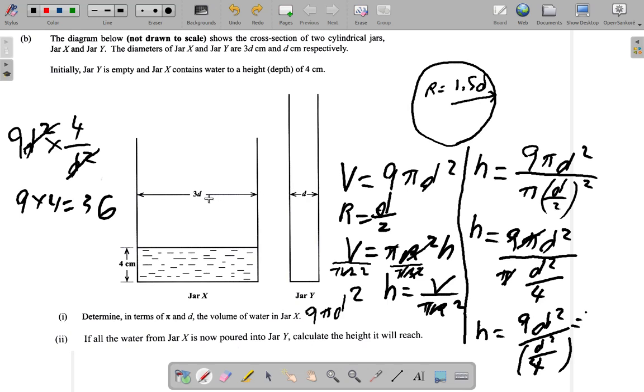Now let's also look at this. Here, the width of the water in Y is one-third that in jar X. Jar Y's radius is one-third jar X's radius. So one-third of this. This is one-third of this.